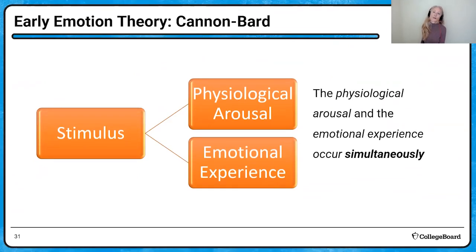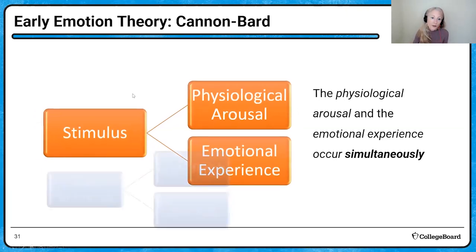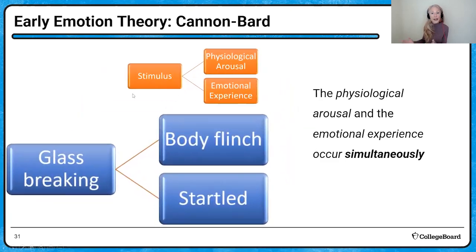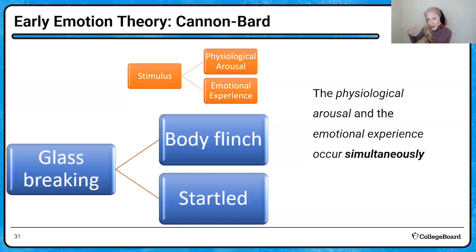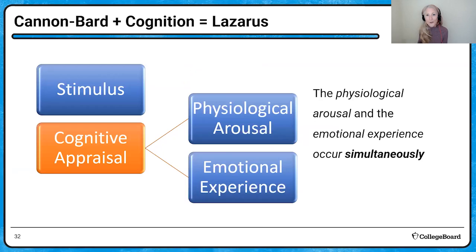Another early emotional theory — the Cannon-Bard theory — had no cognition in it. It starts with some kind of stimulus, and then simultaneously there's a physiological arousal and an emotional experience. For example: you hear glass breaking — your body flinches (physiological arousal) and you have an emotional experience of being startled. But that happens simultaneously.